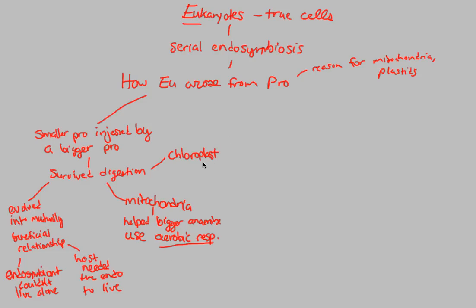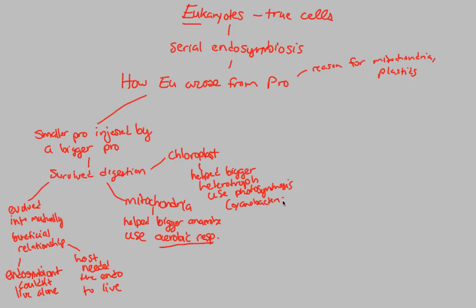The chloroplast, similarly, helped the bigger heterotrophic bacteria use more autotrophic ability — specifically photosynthesis. It said, 'I can take the sunlight's energy and convert it into food.' This was specifically the cyanobacteria that did this, helping out the larger heterotrophic bacteria through photosynthesis.